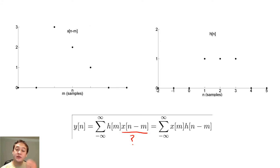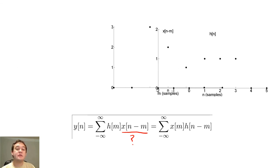So to show how this works, when n is less than 0, every sample of x of n minus m is being multiplied by 0. So y of n is 0 for n less than 0.